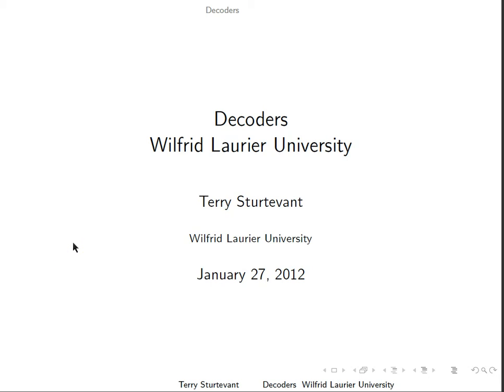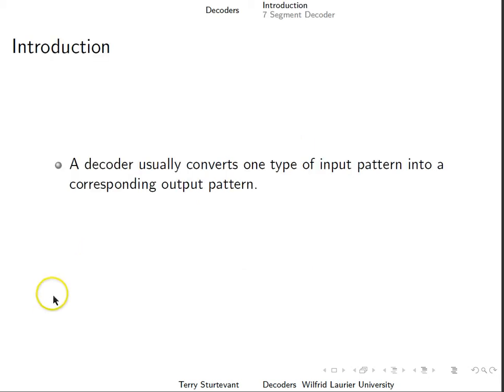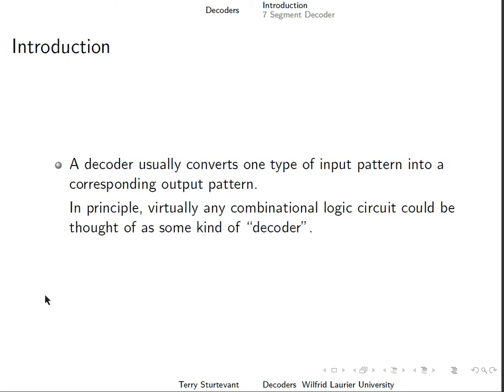This document is an introduction to decoders. A decoder usually converts one type of input pattern into a corresponding output pattern. In principle, virtually any combinational logic circuit could be thought of as some kind of decoder.